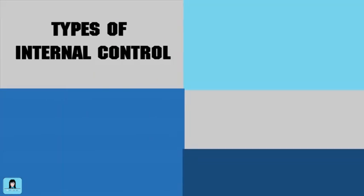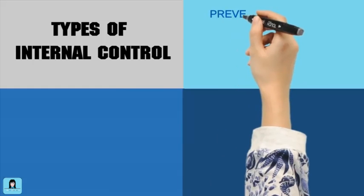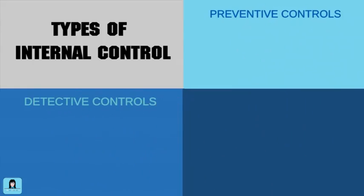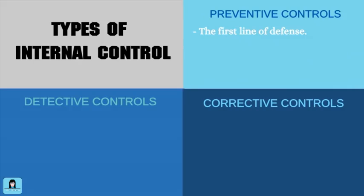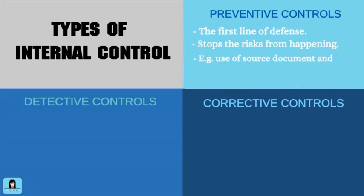There are three types of internal controls that a company can design and implement: preventive controls, detective controls, and corrective controls. Preventive controls are the first line of defense in the control structure. These are passive techniques designed to reduce the frequency of occurrence of undesirable events. Examples of preventive controls are the use of a well-designed source document when collecting data on a transaction, which informs users to enter the necessary data on the document before it is entered into the system, and the use of username and password when logging in to the system.